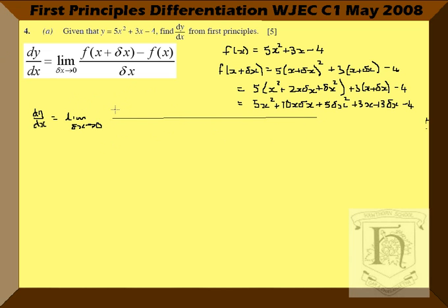It's going to be a long line. So, we've got 5x² plus 10x·δx plus 5(δx)² plus 3x plus 3δx minus 4 — that's f(x + δx). Take away 5x² + 3x - 4, and the denominator is δx.